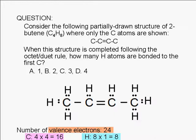Let's count. Here, we have 8 electrons. Here, we have another 8 electrons. And here, we have another 8. For a total of 24.